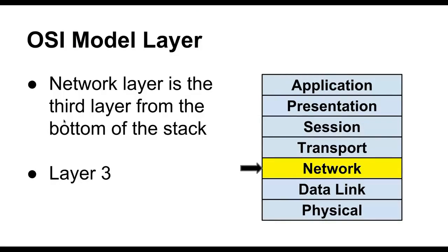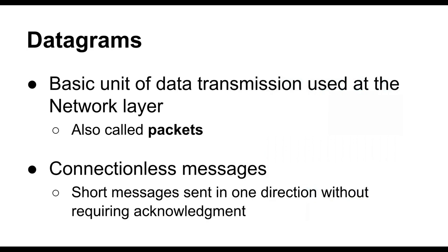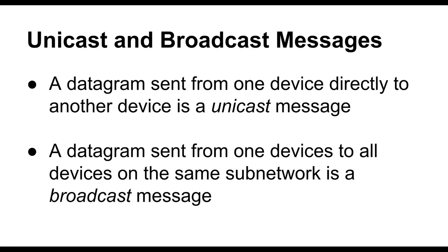The network layer is the third layer from the bottom of the OSI model layer stack — this is Layer 3. This layer operates on units called datagrams, which is our basic unit of data transmission at the network layer. A datagram is also called a packet, and a packet or datagram is simply a connectionless message — a short message sent in one direction without requiring any acknowledgement. We send one of these datagrams from one place to another and have no way of determining if it actually got there.